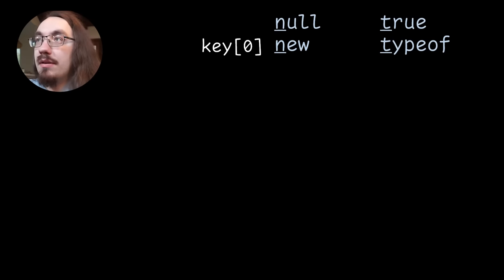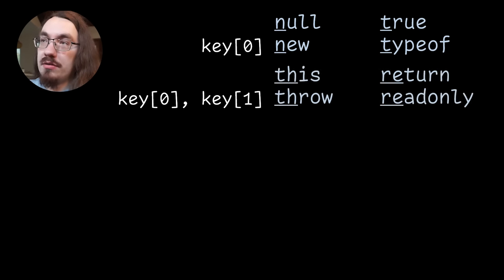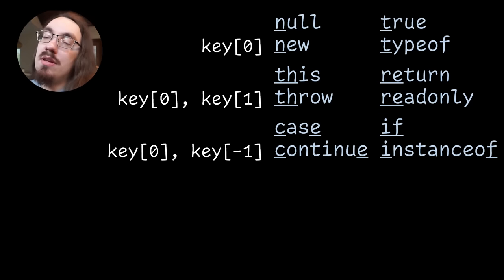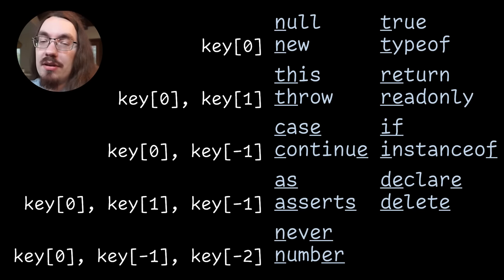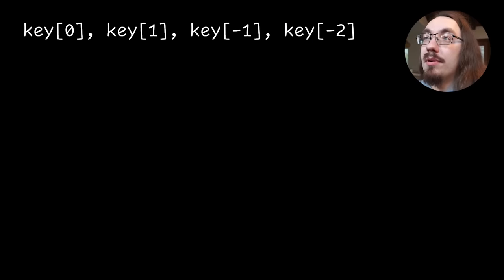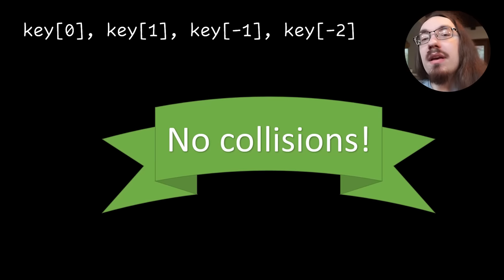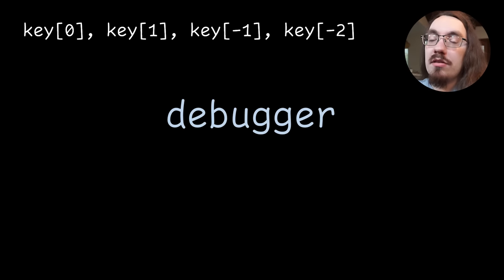Well, if we look at just the first character, we have some collisions like null and new, both start with n, true and type of start with t. If we look at the first two characters, this and throw have a common prefix. Let's try looking at the last character. If we take the first and the last character, it's still not unique. We have case and continue, both start with c and end with e. What if we take the first two characters and the last character? Well, unfortunately, declare and delete both start with d e and end with the letter e. Okay, what if we take the first character in the last two? We also have never a number having a collision. All right, what if we take four characters instead of three? Hey, we get no collisions if we pick these different characters. Let's look at this in more detail.